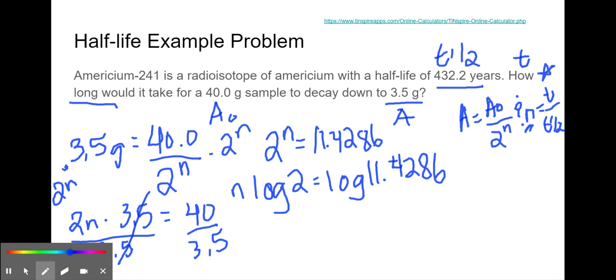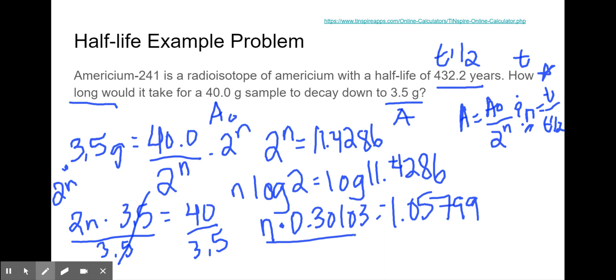The left side is equal to N times 0.30103, which equals the log of 11.4286, which is 1.05799. Then divide both sides by 0.30103 to get N by itself, which gives 3.51458. For now I'm going to keep that number long.